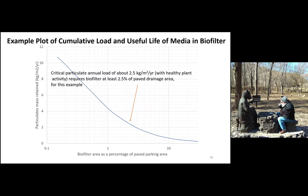One important model output is calculation of clogging conditions and premature failure. We generally want to have about 2.5 kilograms per square meter per year deposited into the device — that's assuming a healthy plant environment. If we have more than that, which corresponds to about 25 kilograms per square meter but over at least 10 years, that corresponds to about a 2.5% of the paved area. If our biofilter is smaller than that, we're likely to have premature clogging. If greater, the plants are able to incorporate the material into the biofilter media. These are generally designed as depth filters, with plant activity enabling water and material to pass through the material itself.